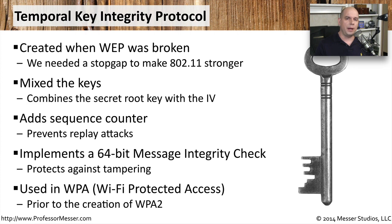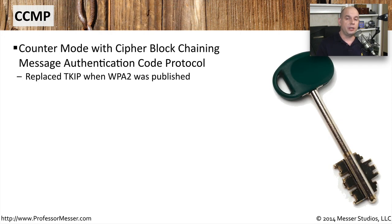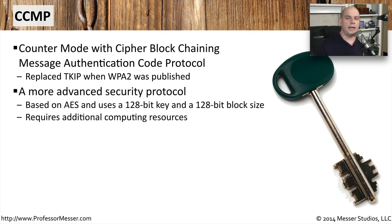TKIP was the stopgap between WEP and WPA2. With WPA2, we chose a different route, implementing CCMP — Counter Mode with Cipher Block Chaining Message Authentication Code Protocol — which replaced TKIP when the final WPA2 implementation was released. This was a more advanced encryption standard with a larger key size, larger block size, and required significantly more computing resources and CPU usage. Around this time, many people had to upgrade their wireless hardware to implement WPA2.